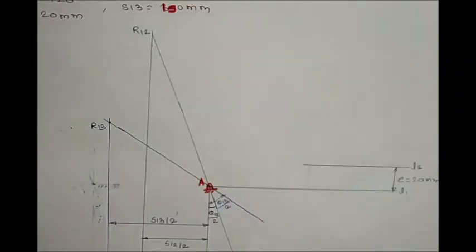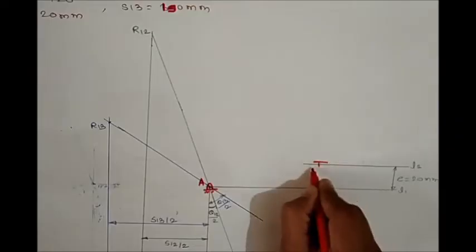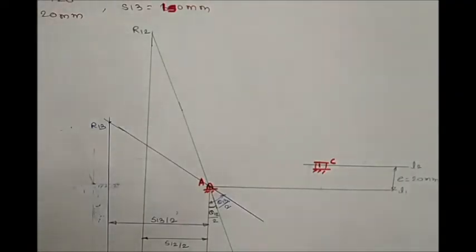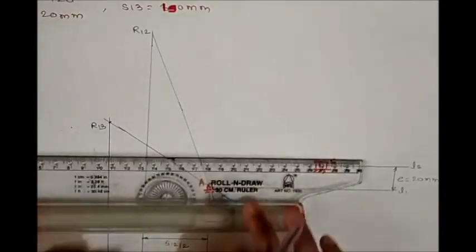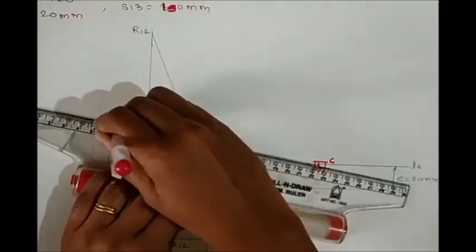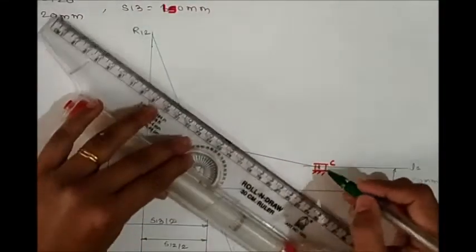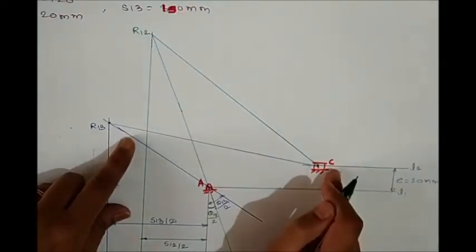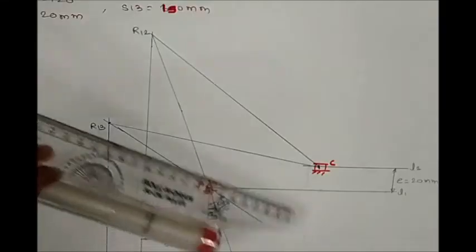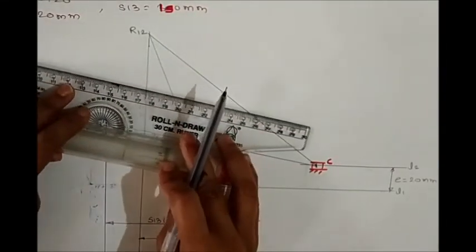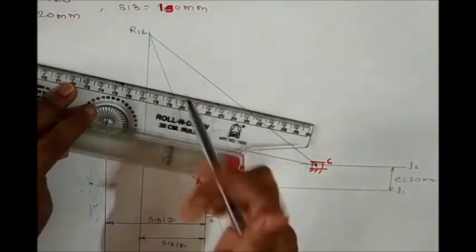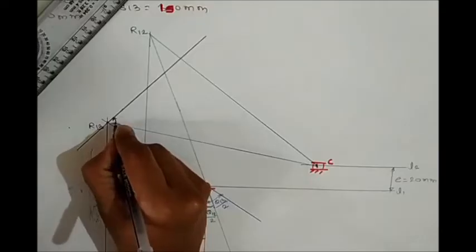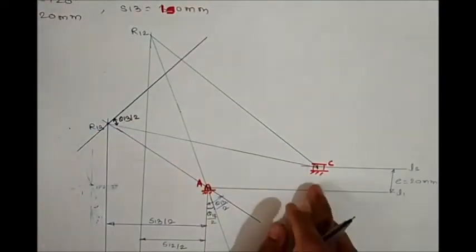Now assume a point C at a suitable position on line L2. Join R13 with C, and similarly join R12 with C. From line C-R13, draw an arbitrary line by taking the angle theta 1-3 by 2, which equals 60 degrees.